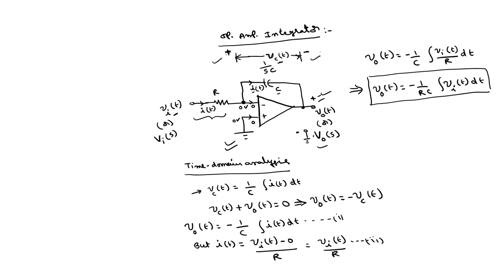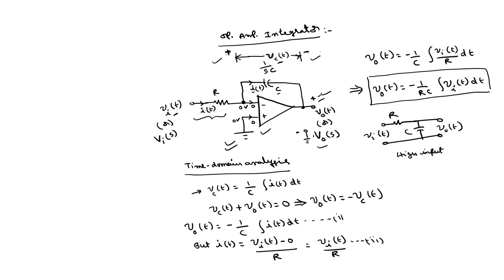We can perform integration using just a resistor and capacitor, but the advantage of using an op-amp integrator is that it provides high input impedance. Additionally, it provides gain: (1/RC) is the gain factor. For example, if C = 1 μF and R = 1 kΩ, then 1/RC = 1000, providing a gain of 1000.